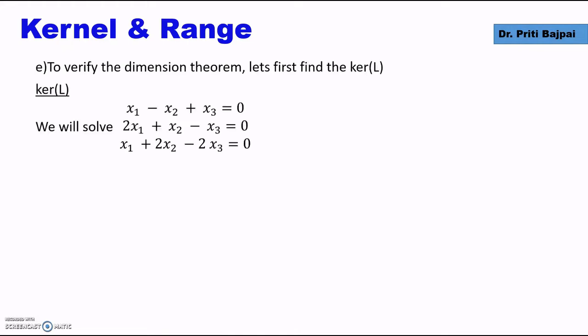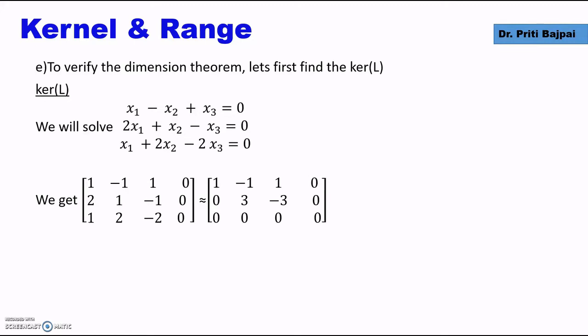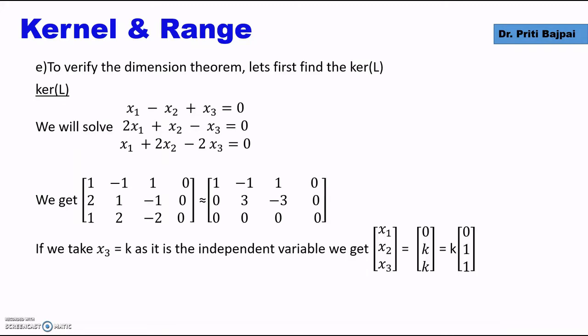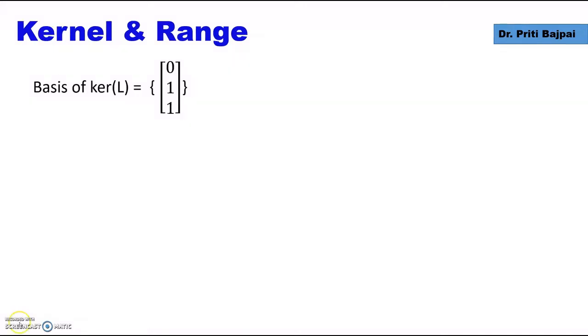To verify the dimension theorem, we first find the kernel of L by equating L(V) to zero. The system gives L(V) as (x₁ - x₂ + x₃, 2x₁ + x₂ - x₃, x₁ + 2x₂ - 2x₃) = (0, 0, 0). Solving this homogeneous system, taking x₃ = k as the independent variable, we get (x₁, x₂, x₃) = (0, k, k). Writing as a vector: k(0, 1, 1). So the basis of the kernel is {(0, 1, 1)} and the dimension of the kernel is 1.